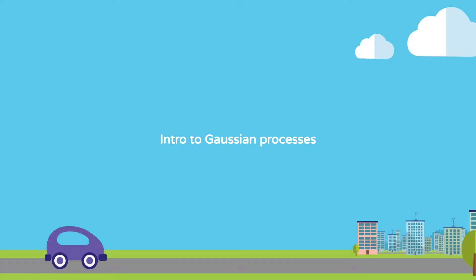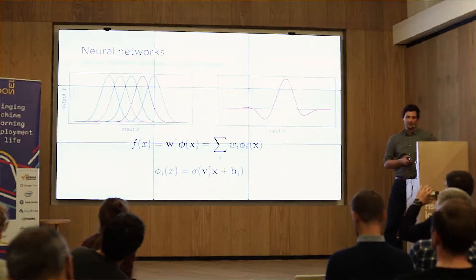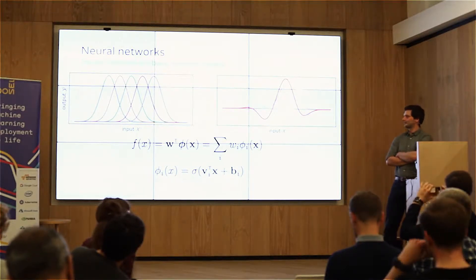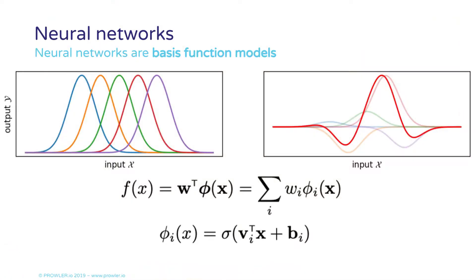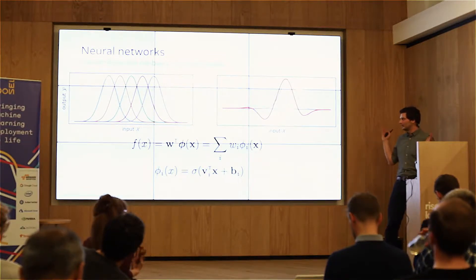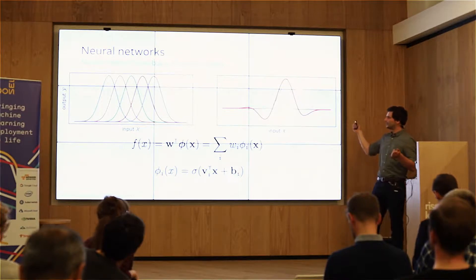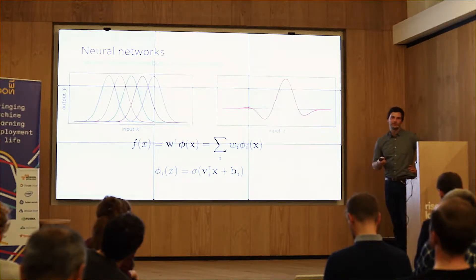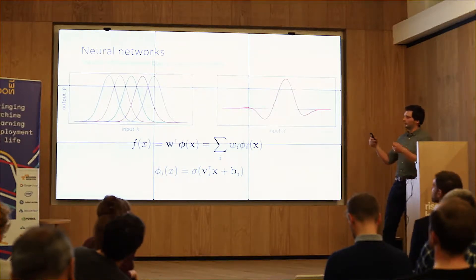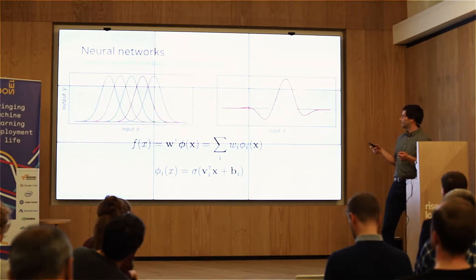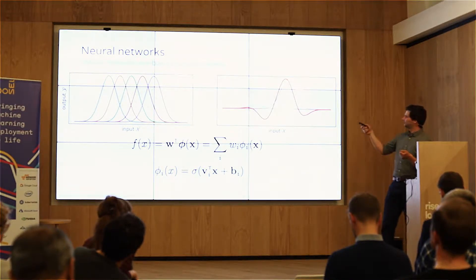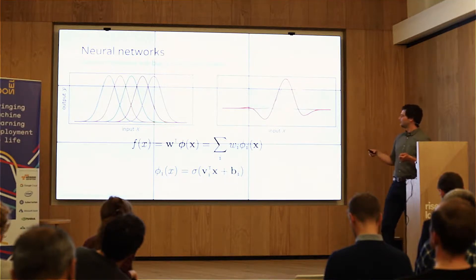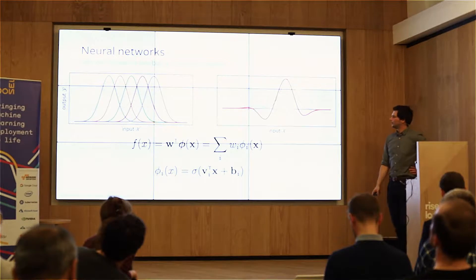So I'll start with an introduction to Gaussian processes. Because this is the TensorFlow meetup, I'm going to start where I think everybody is familiar — neural networks. In statistical terms, people would call a neural network a basis function model. It means we create complicated functions from simple building blocks called basis functions, and we sum together those basis functions with different weights in order to create complicated functions. On the right-hand side, we see the components of the thick red function — each one is a scaled basis function — and we sum them all together to get our overall function f.